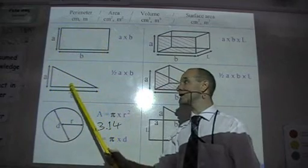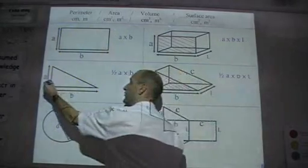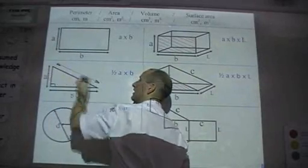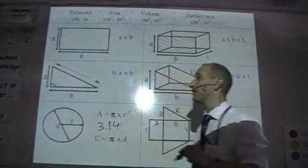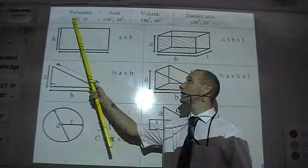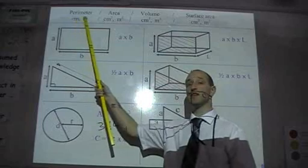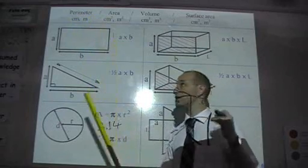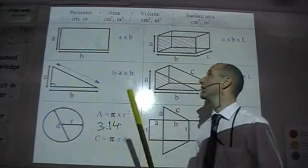For this one, interestingly, if this is a right angle you would need to use Pythagoras to work out this length here and then add all three together. Units of perimeter are millimetres, centimetres, metres, there are no squares or cubes or anything, they're just lengths.